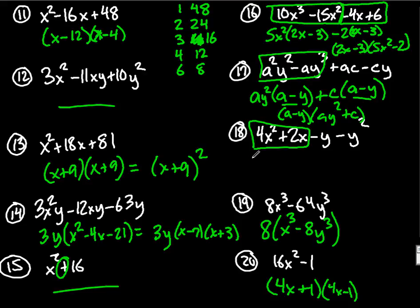Last one here with grouping, pull out a 2x, which leaves me with 2x plus 1. And then I can factor out a, this should have been, I think, y and y squared. So I can pull out a negative y.